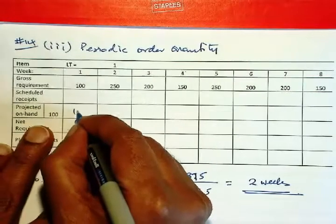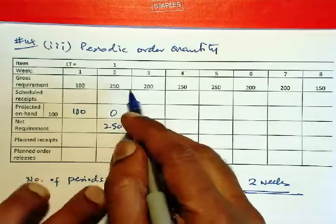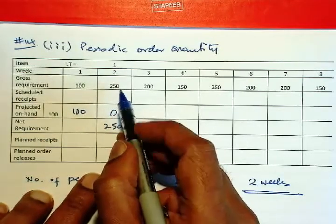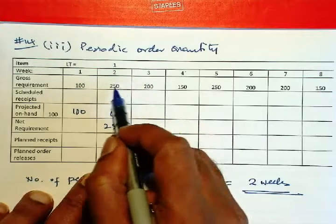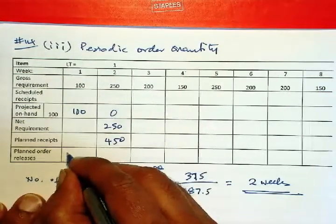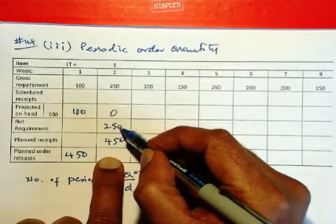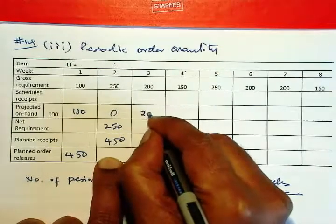So we have a requirement here of 250. So now we add 250 and 200, two weeks' worth of requirement. So this will be 450. So we will order here 450 minus 250, which will give you 200. So no requirement here.